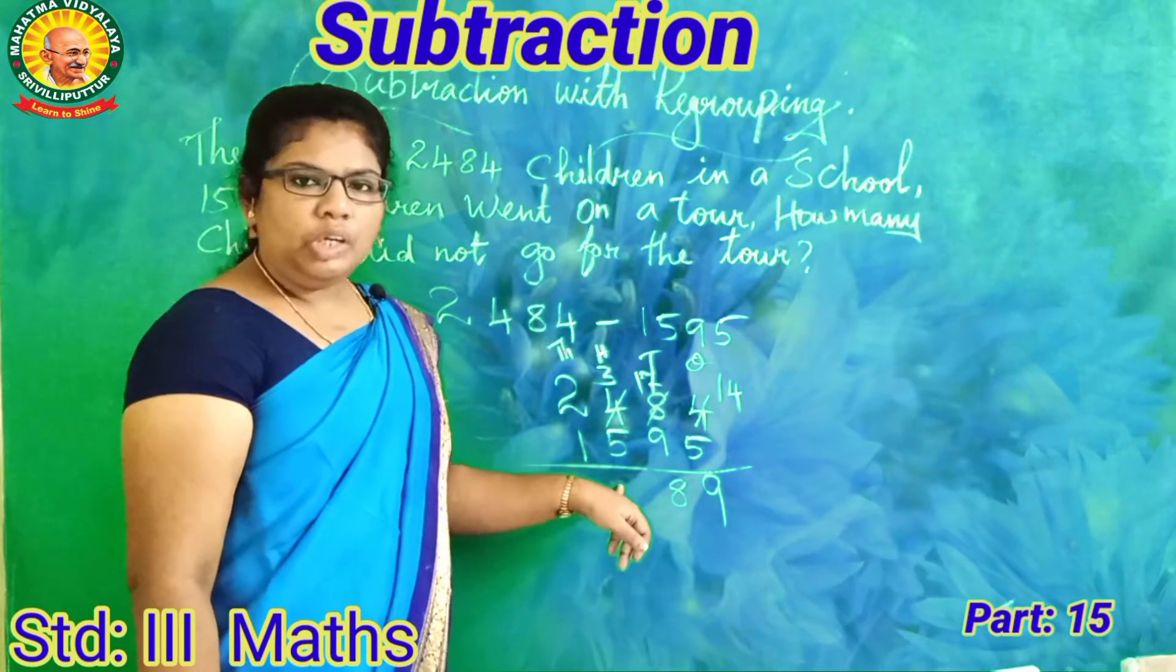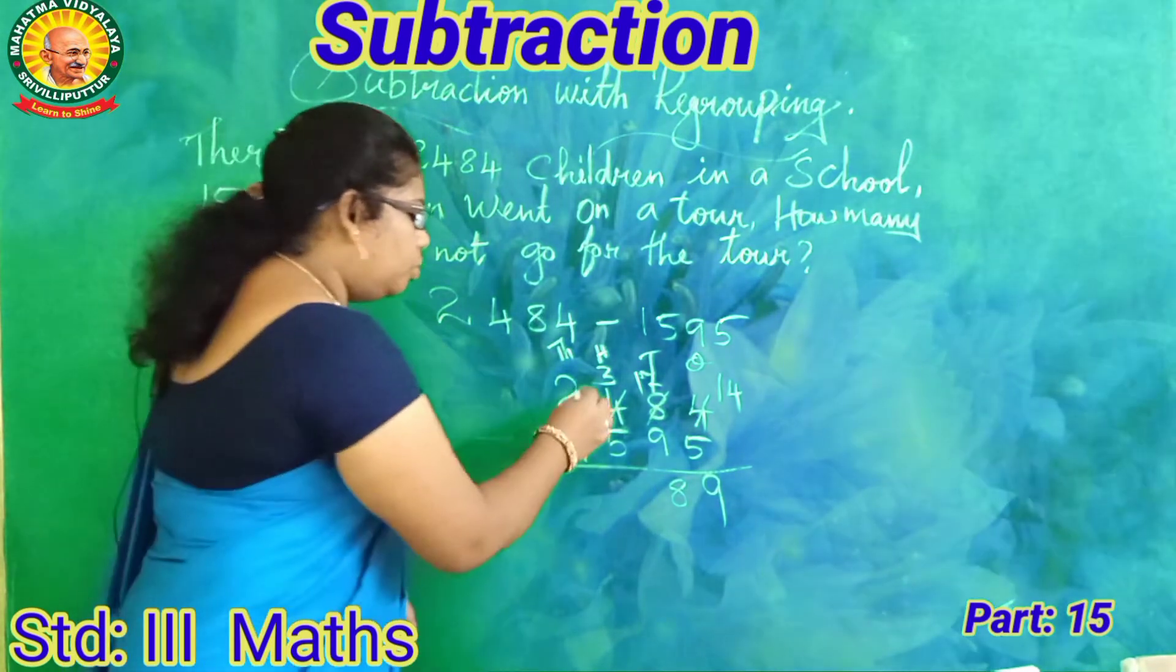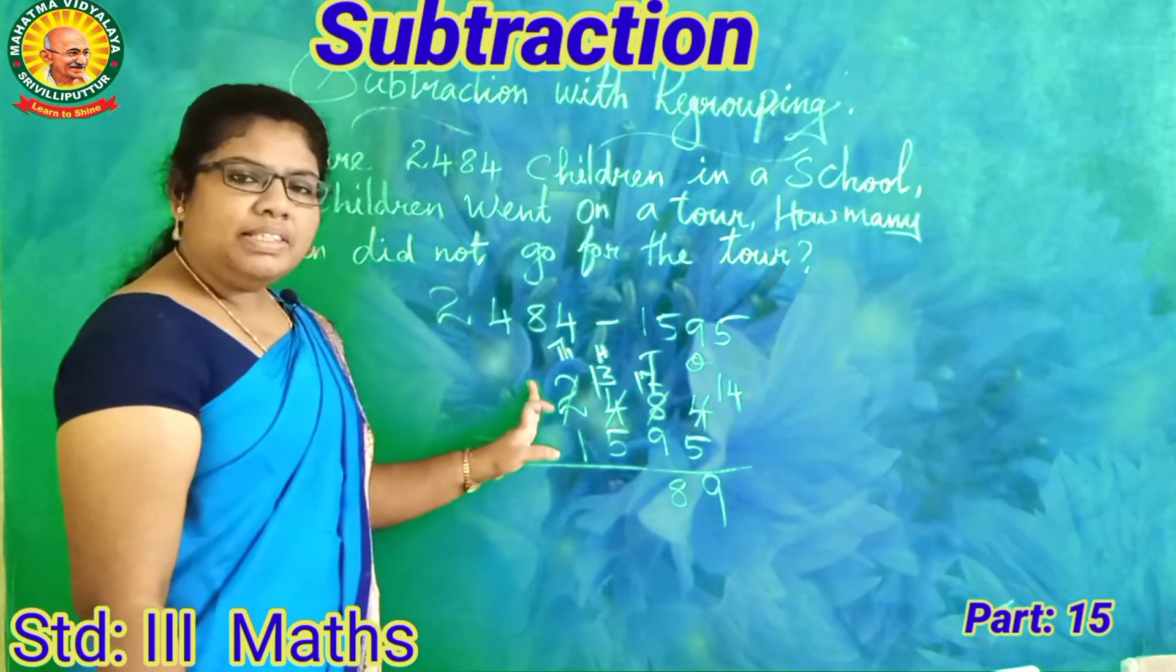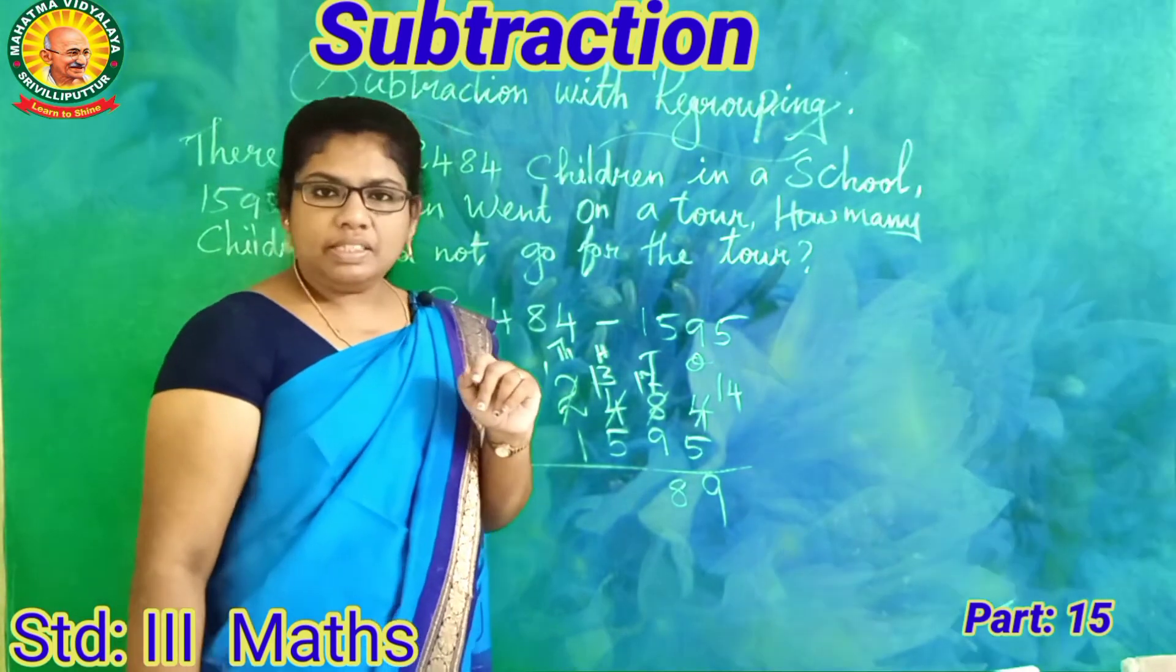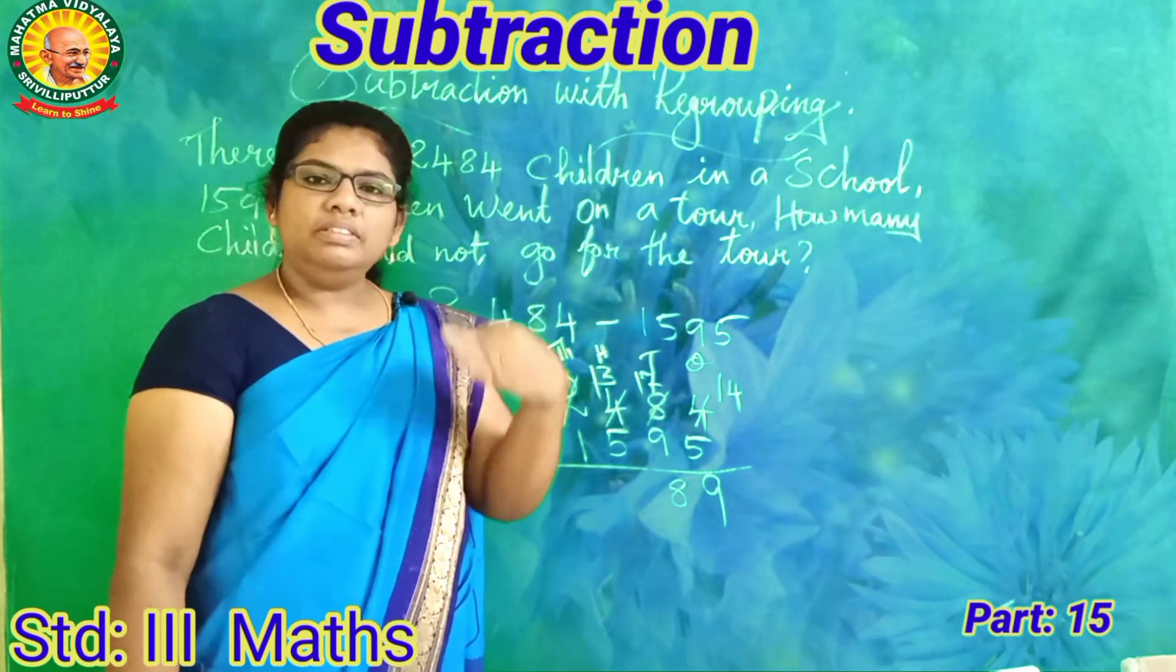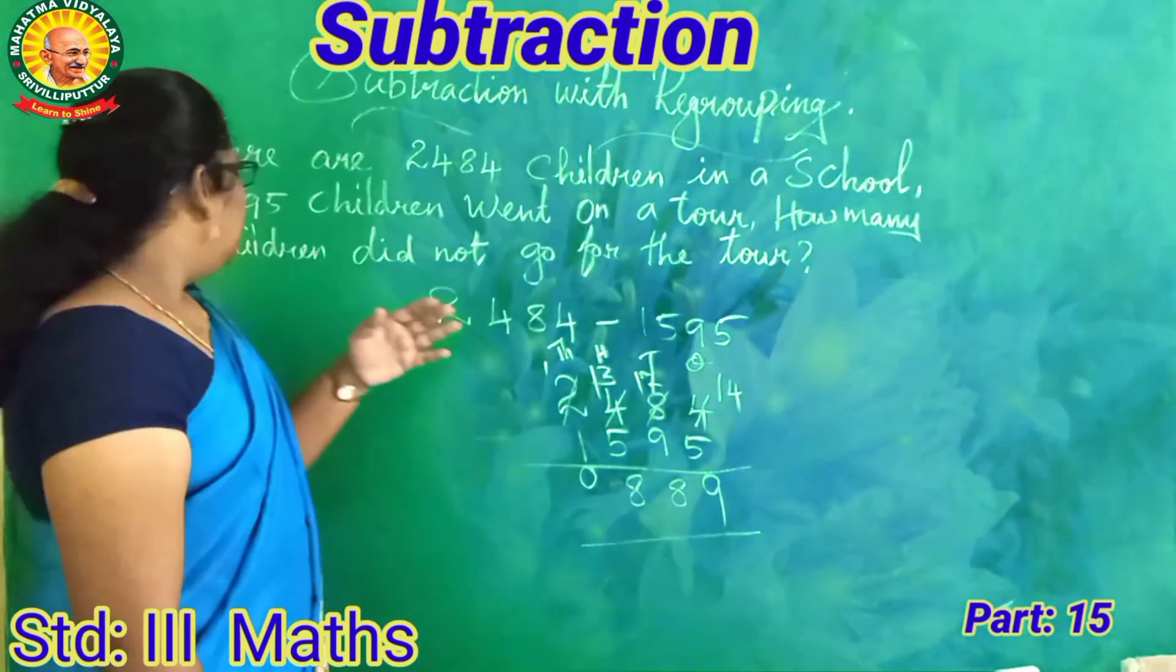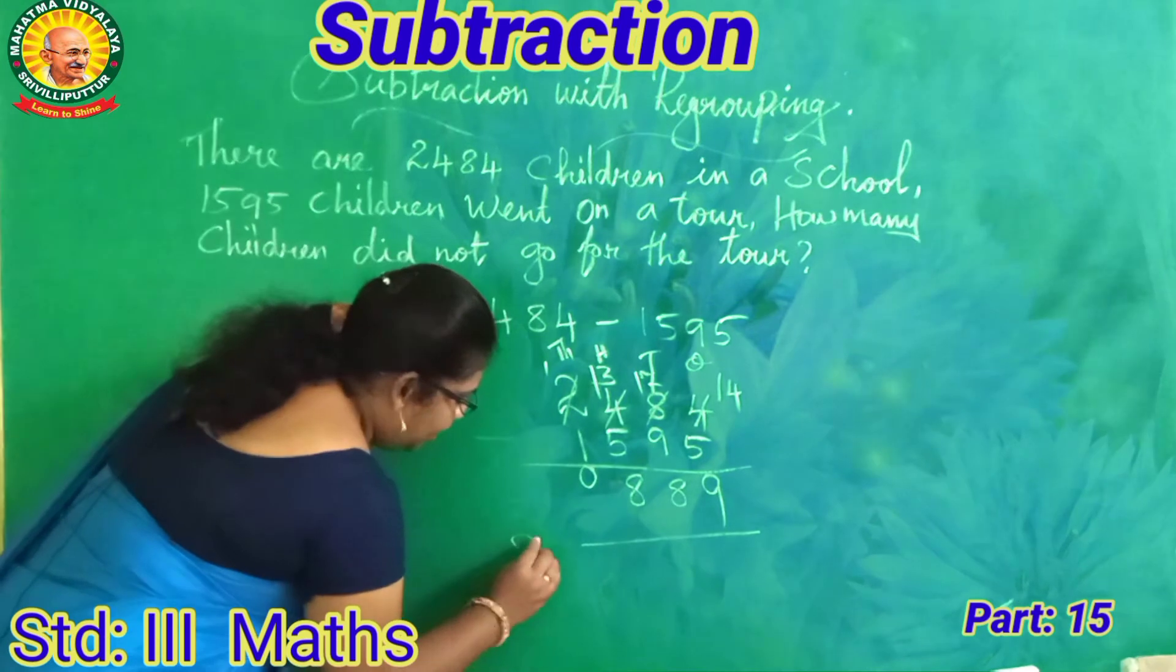And look at here, three hundreds minus five hundreds. No, smaller value. So we have to borrow from thousands. Two thousands, borrow one, leaves one thousand. Now we have thirteen hundreds. Thirteen minus five equals eight. And one minus one, same number subtract, we get zero. How many children did not go for the tour? Yes, 889.